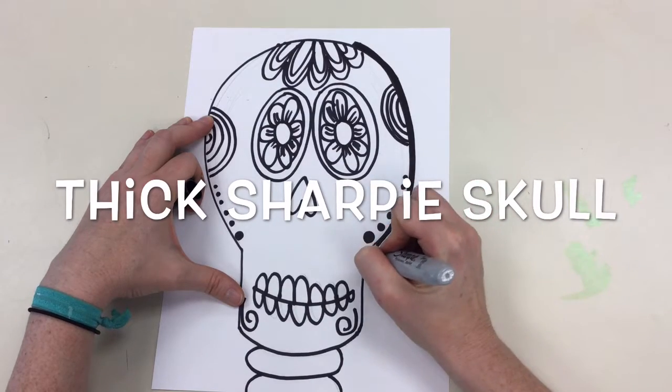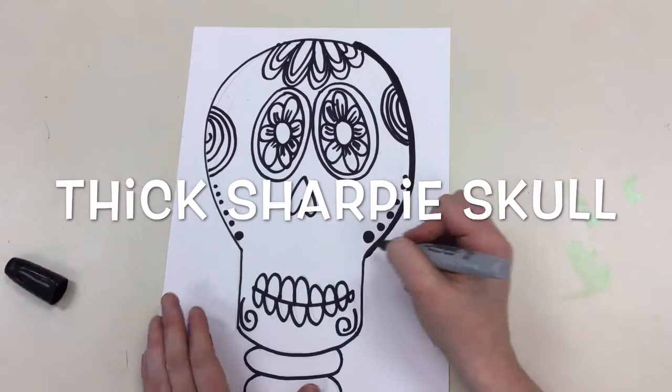Use a super thick sharpie to trace around your original skull that you drew.